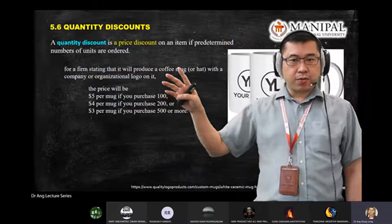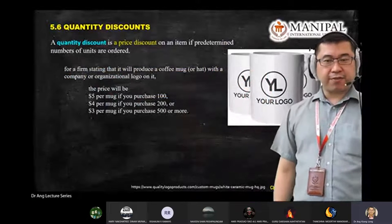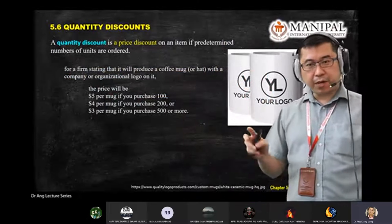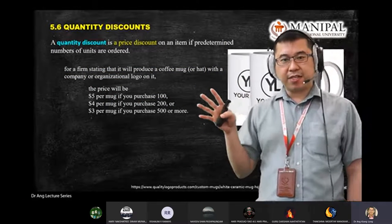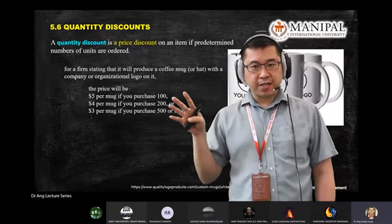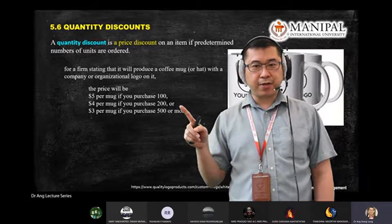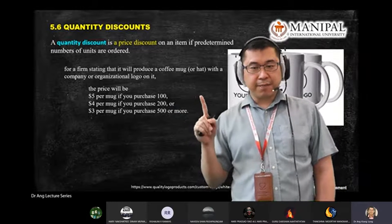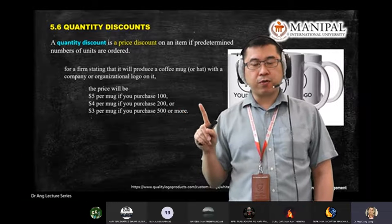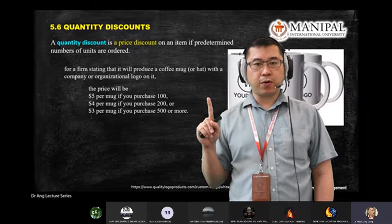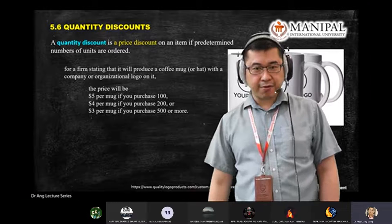This happens in real life. If you go out there, it's about your bargaining power. You buy more, you have more bargaining power. But you need to be careful about your capital and also your inventory — the space that you have.